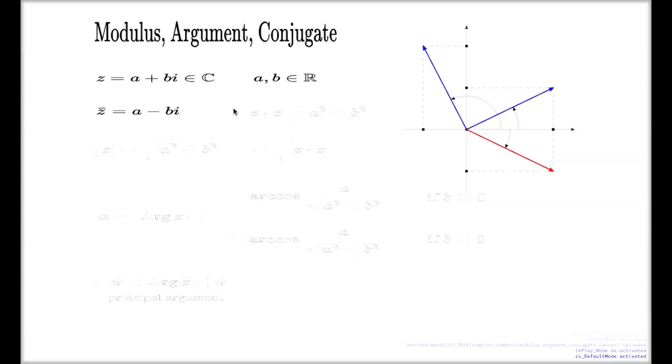The interesting thing about the complex conjugate, something worth remembering, is that if you multiply a complex number with its complex conjugate, you always come up with the sum of the squares of the real and imaginary part.